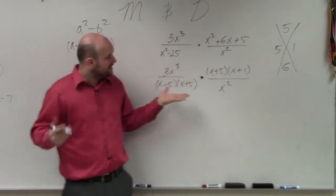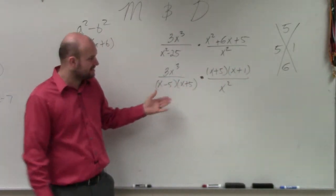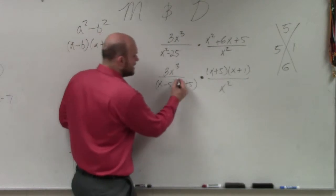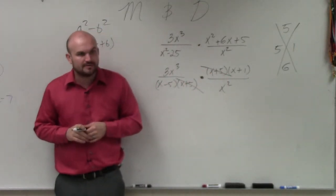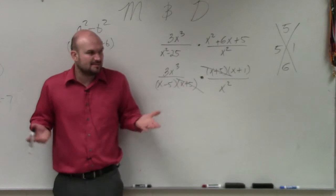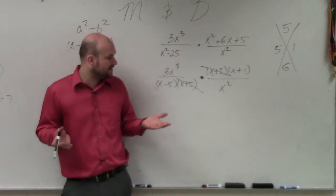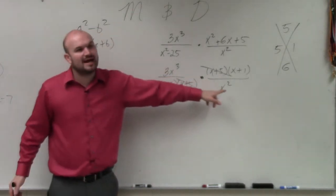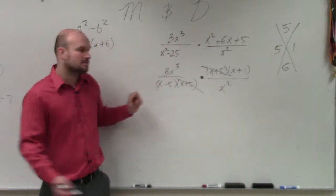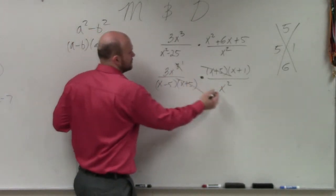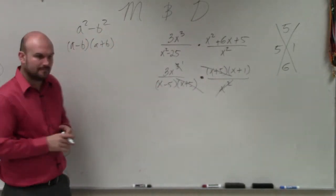What's helpful about factoring to rewrite them as a product is that now you can see that (x plus 5) over (x plus 5) divides out — it's the same expression, 1 in the numerator and 1 in the denominator. And x cubed divided by x squared is going to leave you with just x to the first power.